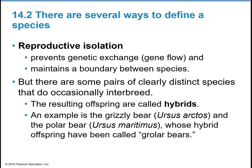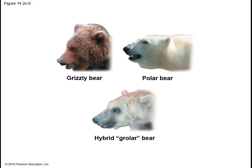Reproductive isolation will prevent genetic exchange and maintain a boundary between species. There are some pairs of species that do occasionally interbreed. The resulting offspring are called hybrids. An example is the grizzly bear and the polar bear, whose hybrid offspring have been called growler bears.